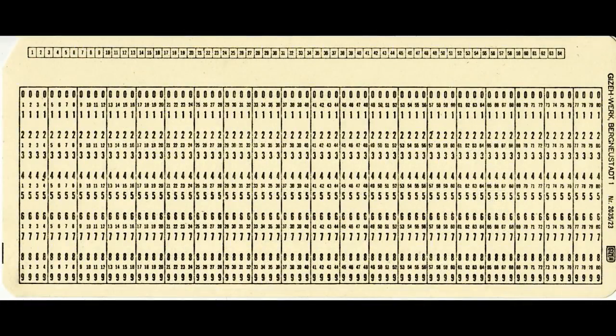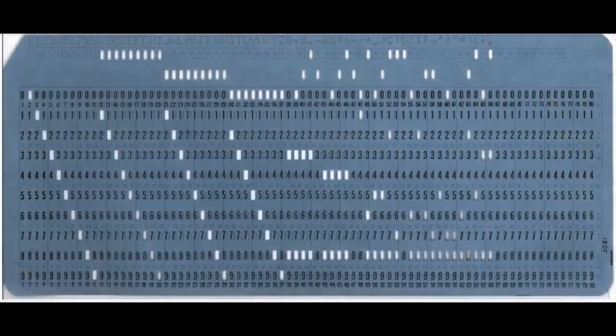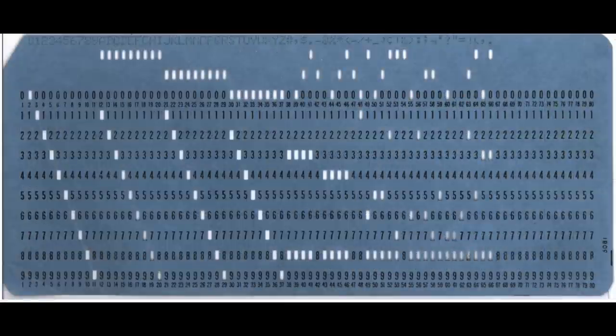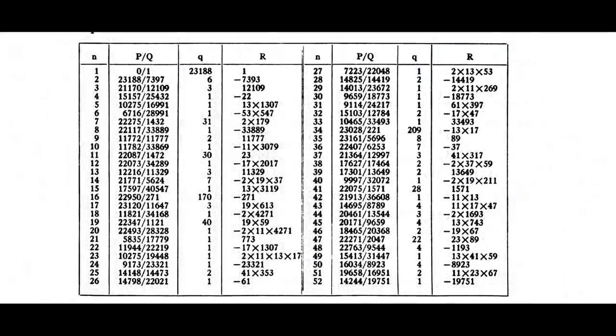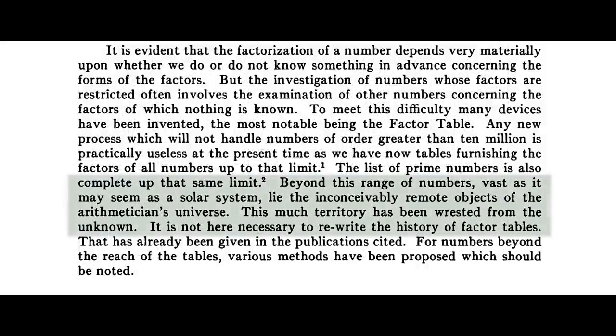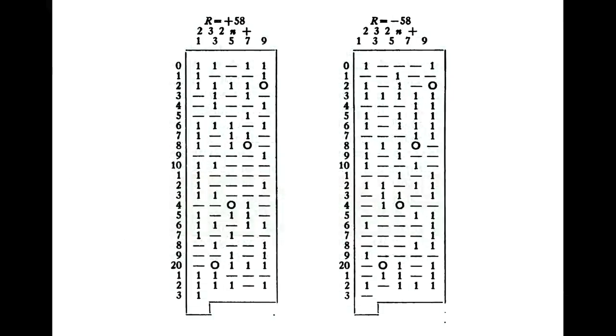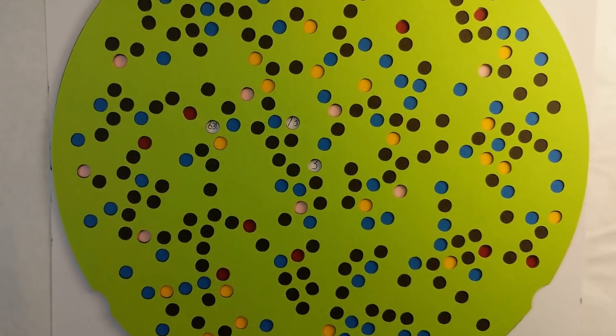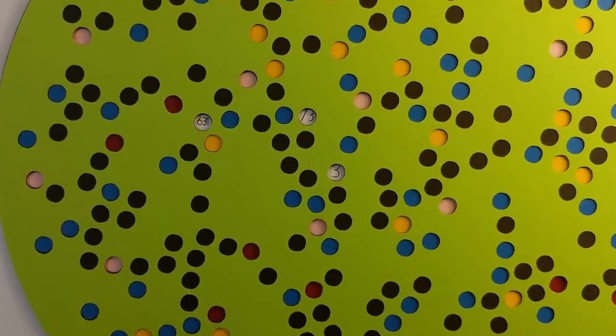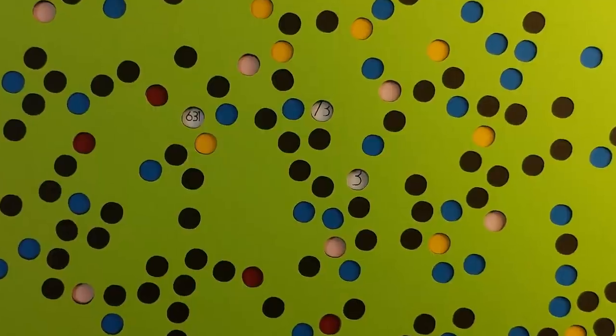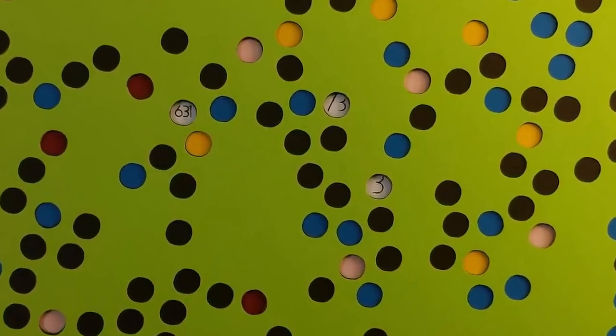Upon each sheet was set a grid of the first 5,000 prime numbers. Using the recurrence process I showed you, the user chose a subset of the sheets and carefully overlaid them on one another. A decade later, they were updated by John D. Elder and made on Hollerith punch cards, the punch cards you've seen in computer museums. These sets can still be found at some university libraries across the country. At the time, factorization and prime tables reached to about 10 million. In Elder's booklet, we read, beyond this range of numbers, vast as it may seem as a solar system, lie the inconceivably remote objects of the arithmetician's universe. This much territory has been wrested from the unknown. The new stencil system could factor numbers up to several billion, sometimes further.